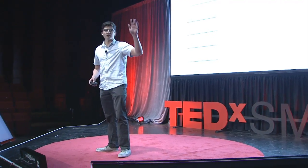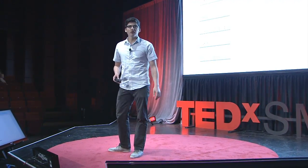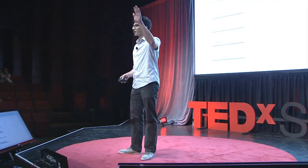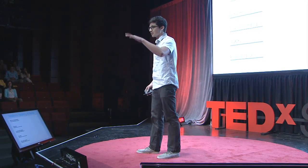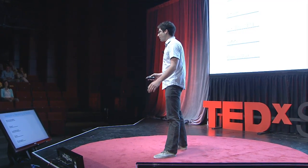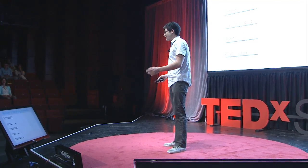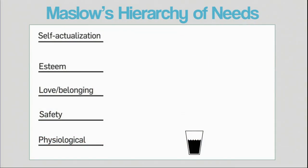Quick question — who had a glass of water this morning? Who took a shower this morning? A few less people. Physiologically, a lot of people had some water. Also, cities buy and sell water, which provides financial safety — they're able to use that resource in that way.